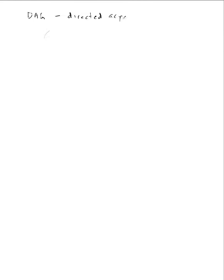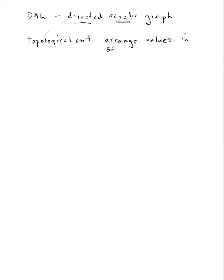I'd like to talk about DAGs and topological sorts. DAG is short for Directed Acyclic Graph, which is a very common data structure in computer science, and the name tells you what you need to know about it. The topological sort is closely related to a DAG — if you can do a topological sort on a graph, then it's a DAG. The idea of topological sort is to arrange the values in the order reflected by the direction of the graph's sorted order.